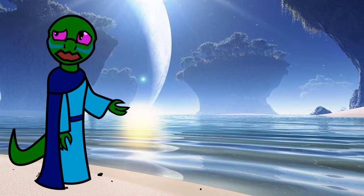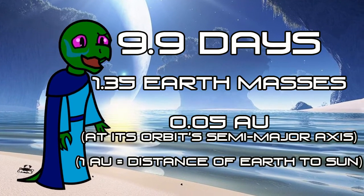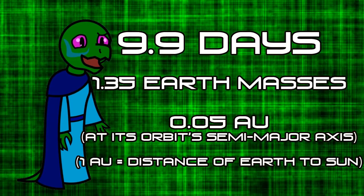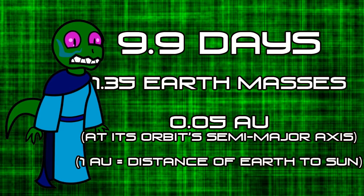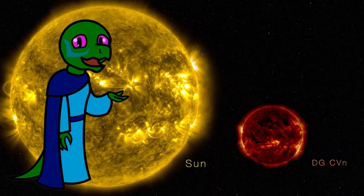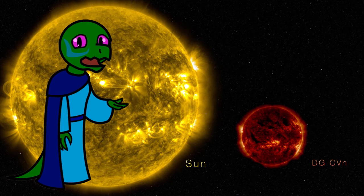You will have noticed that Ross 128 b's orbital period is extremely short and that it's very close to its star. So how could it possibly sustain life? Well, Ross 128 is a Class M star, known as a red dwarf, which is one of the smallest, dimmest, most common star types in our galaxy.